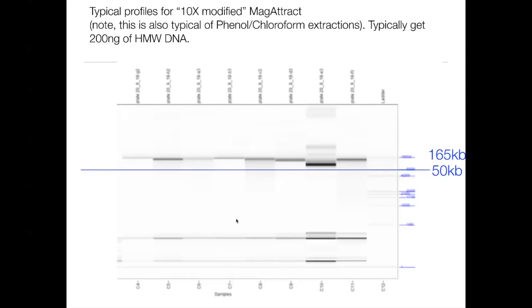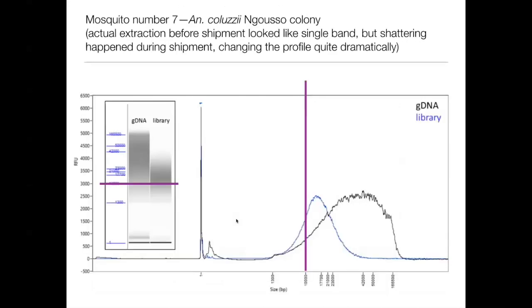The 10X modified MagAttract approach gives a very different profile, with molecules typically being greater than 150 KB, and some that are really quite long. We've also done phenol-chloroform extractions, and that profile is very typical of a phenol-chloroform extraction too. We're getting around 200 nanograms out of each mosquito with this approach.